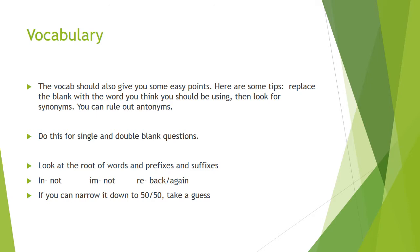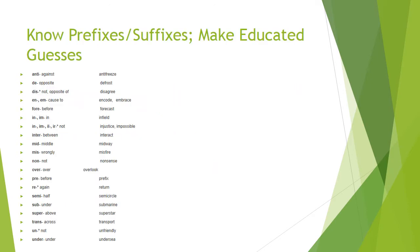If you can rule out an answer, the possibility of gaining some points far outweighs the consequences of getting it wrong. If you haven't ever seen some of the words on the test, you can always look for prefixes and suffixes. For example, in the question: 'Many private universities depend heavily on blank and wealthy individuals who support them with gifts and bequests'—the prefix 'beni' means good, so 'benefactor' would be the right answer.